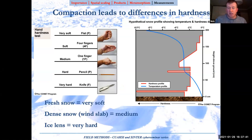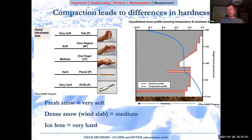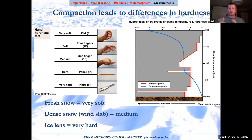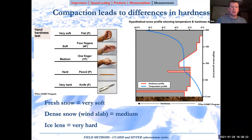That impacts hardness. Within a snowpack, if it's cold, you'll use your mitten to see if you can get your fist in — that's very soft — then down through four fingers, one finger, then hacking in with a pencil or penknife. Those are rudimentary but interesting ways to show differences within the vertical profile. The grey area on the right represents the hardness profile you might see in a particular snowpack — going from fresh snow, which is very soft, to ice lenses which are very hard and require a penknife.